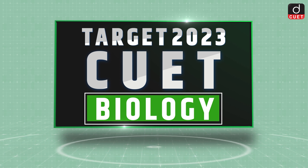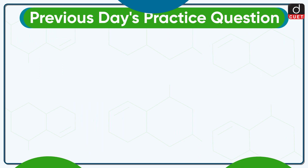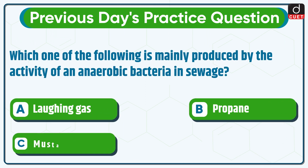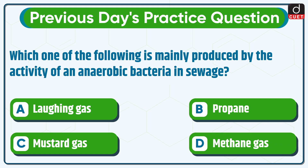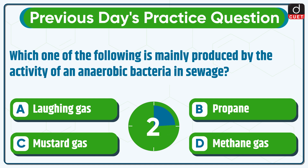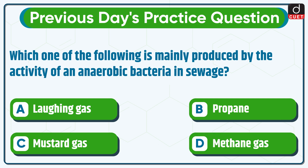Hello everyone, welcome to Target's CUET Biology episode. Let's begin with the previous day's practice question. The question was: which one of the following is mainly produced by the activity of anaerobic bacteria in sewage? Laughing Gas, Propane, Mustard Gas, or Methane Gas? The correct answer is option D, Methane Gas.